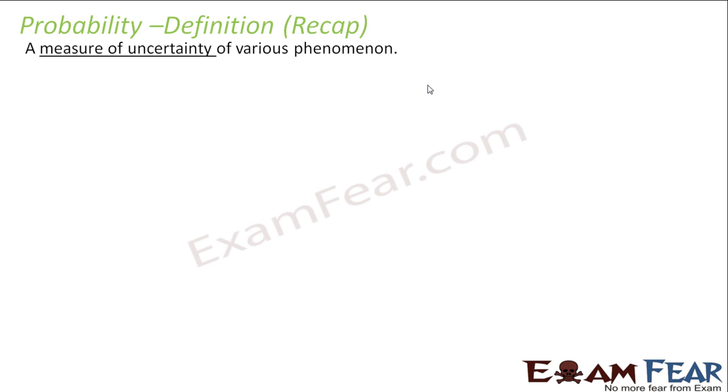You throw a coin, you may get a head, you may get a tail. There is uncertainty there. So in those kind of scenarios we want to find what is the uncertainty of getting a head or tail. In such scenarios we use probability.